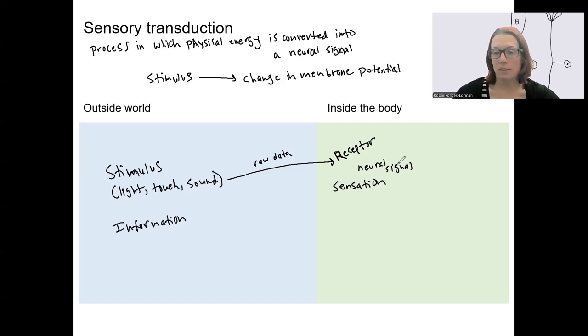Oftentimes when we have sensation, we have perception of that sensation. Perception is when we're aware of what we've sensed. This happens if the information travels not just to the CNS, but to a primary cortex.